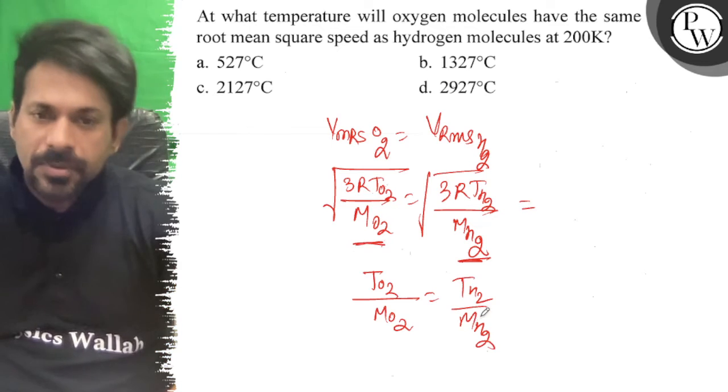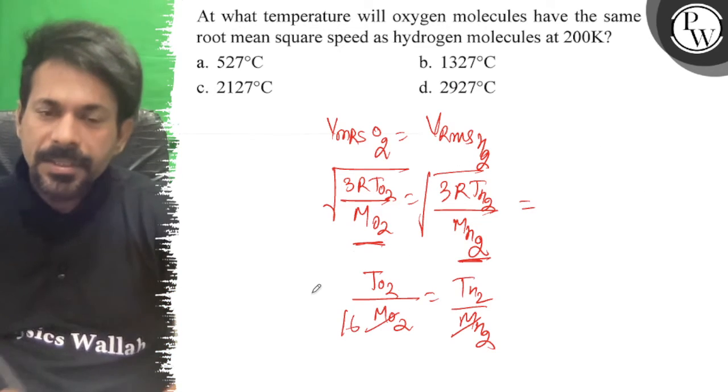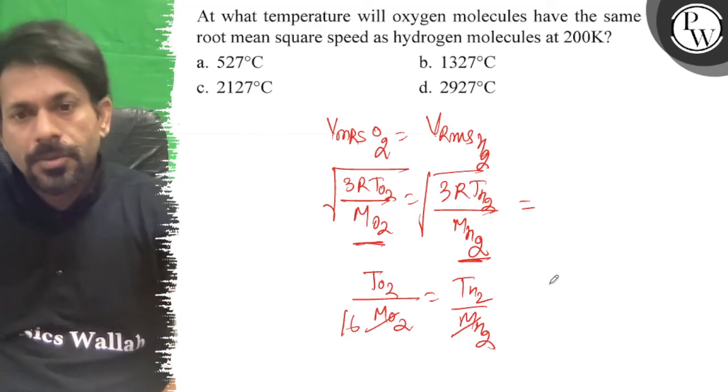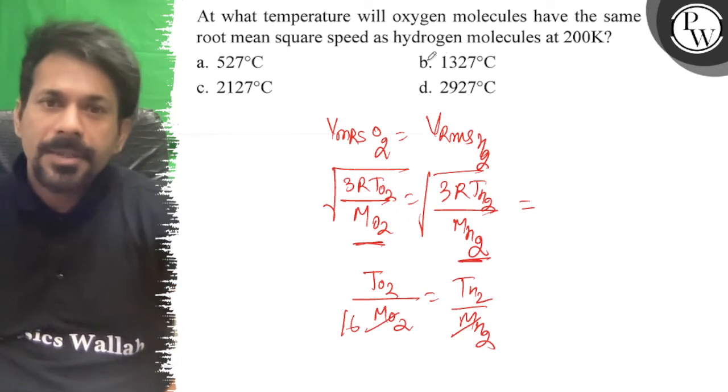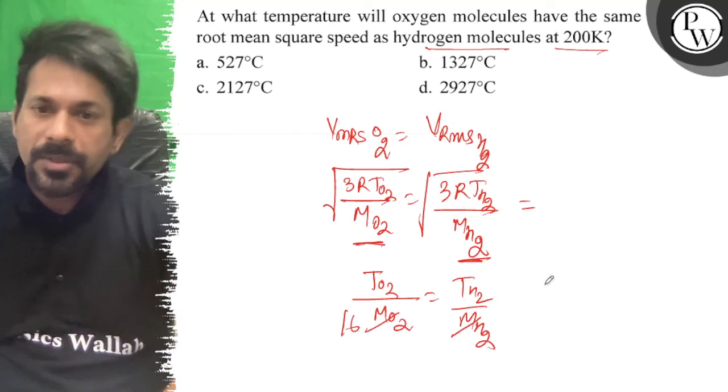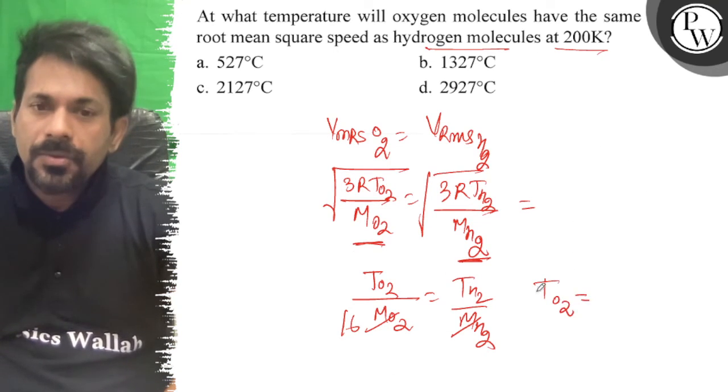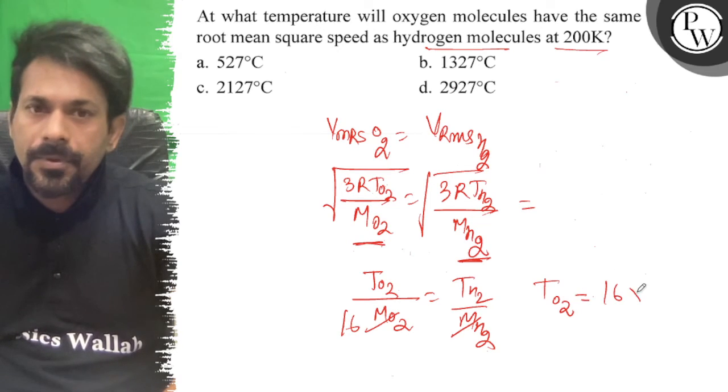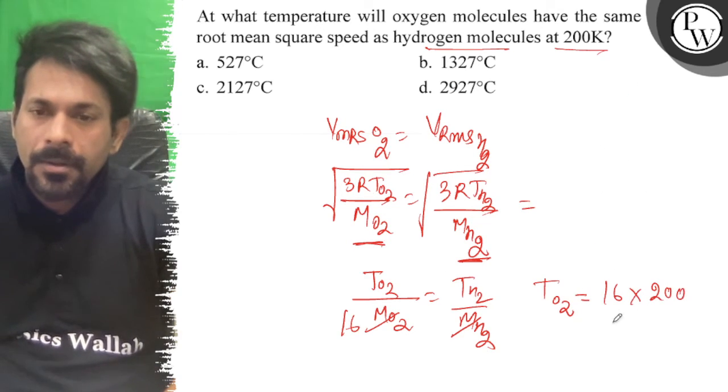So this gives us 32 over 2, which is 16 times. T of hydrogen molecules is at 200, so T of O2 equals 16 times 200, which equals 3200 Kelvin.